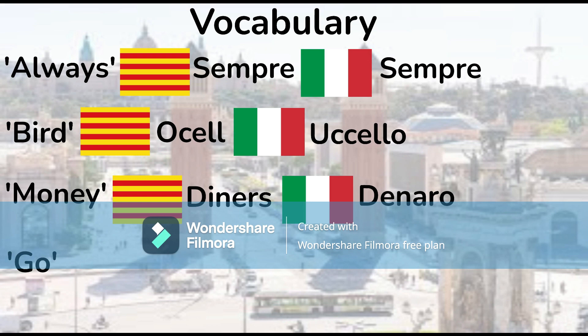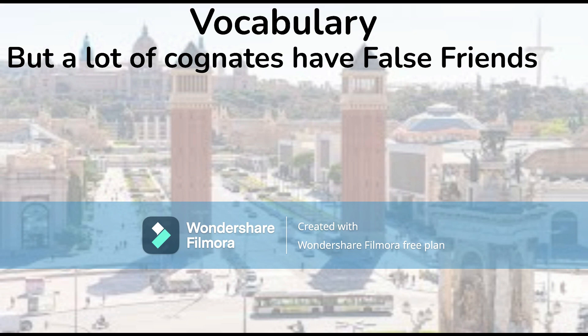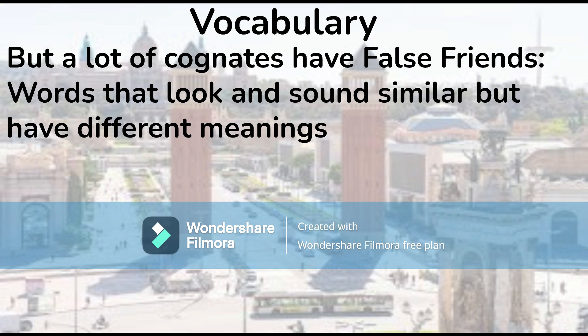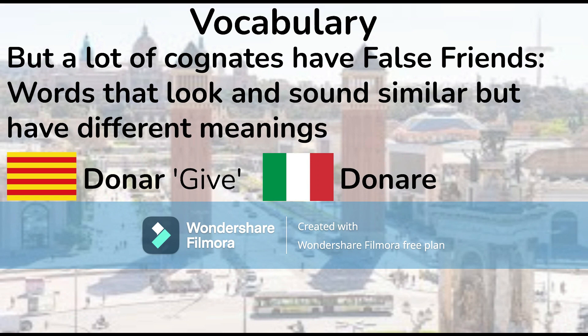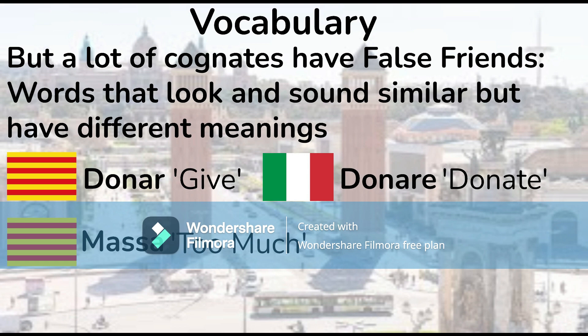But a lot of these cognates have false friends — words that look and sound quite similar to each other but of course have different meanings. In Catalan, 'dar' is the verb meaning to give, but in Italian it means to donate. 'Massa' is the word for too much in Catalan, but means mass in Italian.